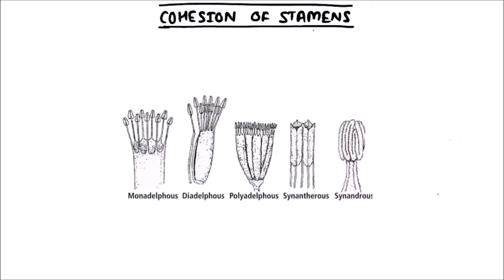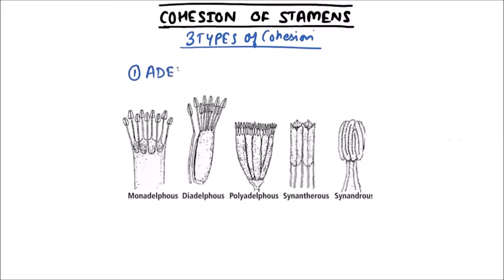Welcome to Studio Biology. In this video we are going to discuss the types of cohesion of stamens. There are three major types of cohesion. The first one is adelphus.